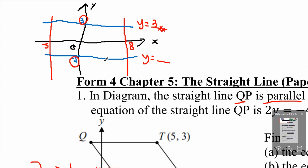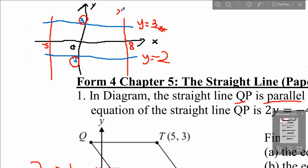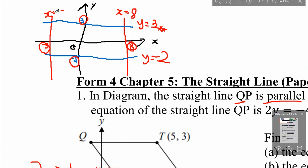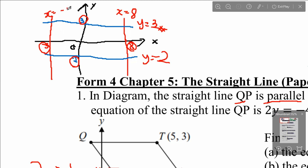For another blue line where the Y-intercept is negative 2, the equation will be Y equals to negative 2. For a vertical line, we will have X equals to something, and this something refers to the X-intercept. So if the X-intercept is 8, the equation is X equals to 8, and if it is negative 5, the equation is X equals to negative 5.